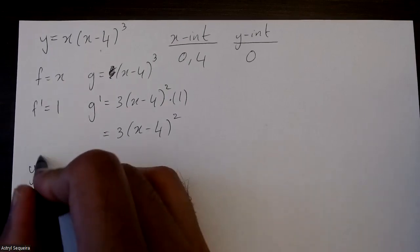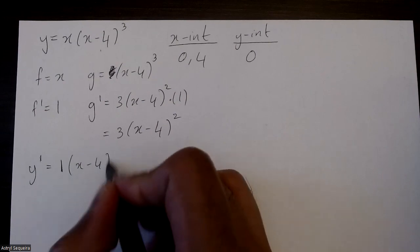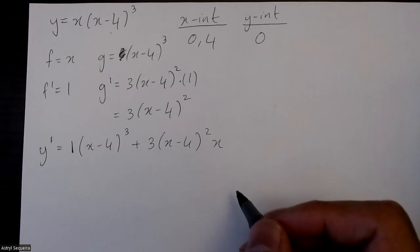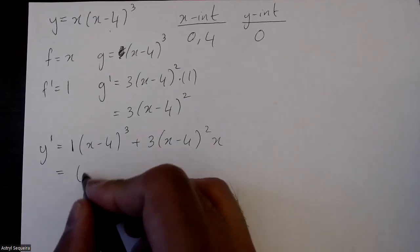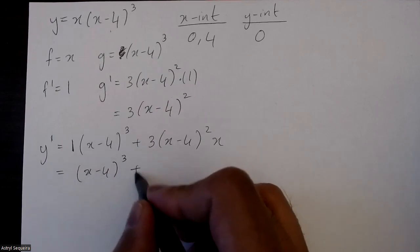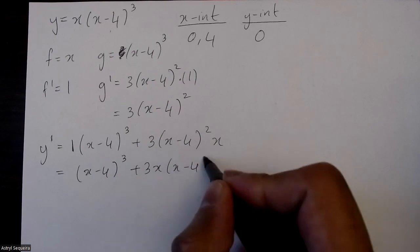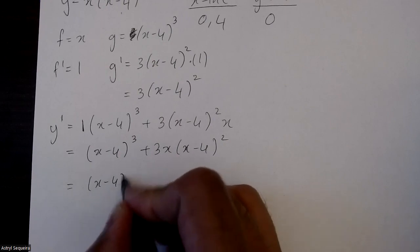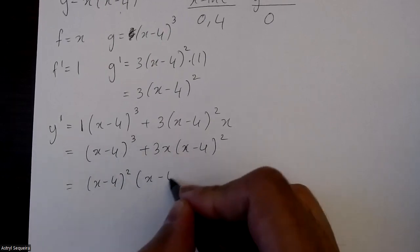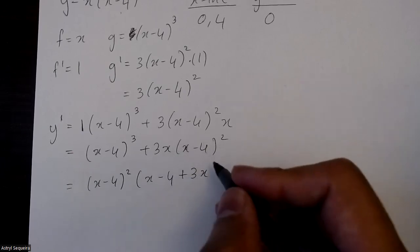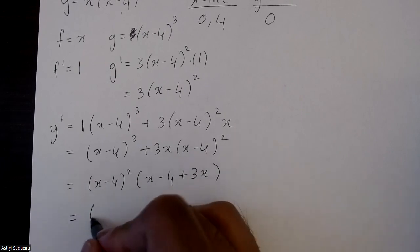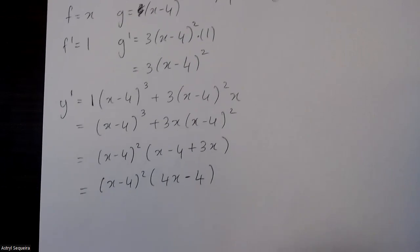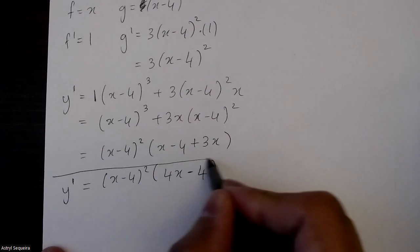Now I'll apply the product rule. y prime equals f prime·g plus g prime·f. Simplifying: 1 times (x minus 4)³ is just (x minus 4)³, and I'll move the x to the front. I can simplify further by factoring out (x minus 4)². That leaves (x minus 4) in the first term and 3x in the second term. Combining like terms inside gives 4x minus 4.